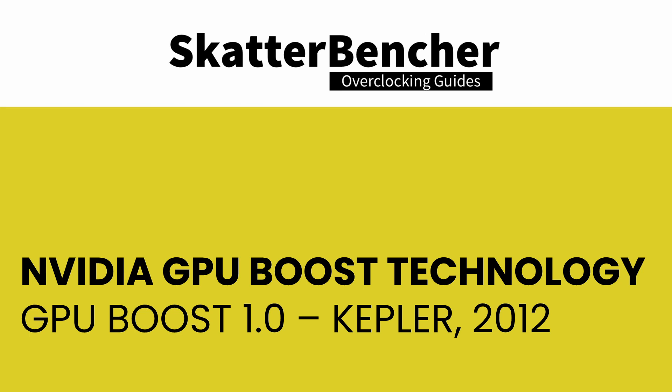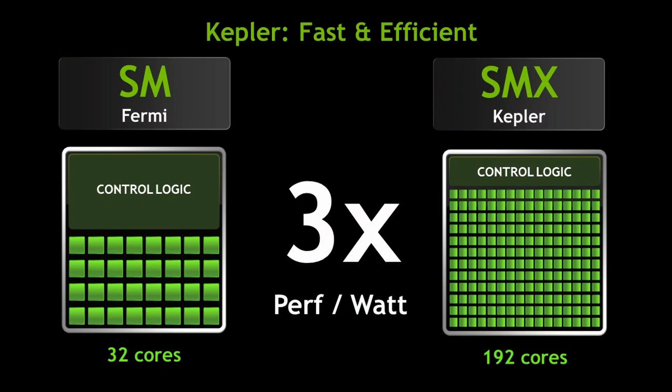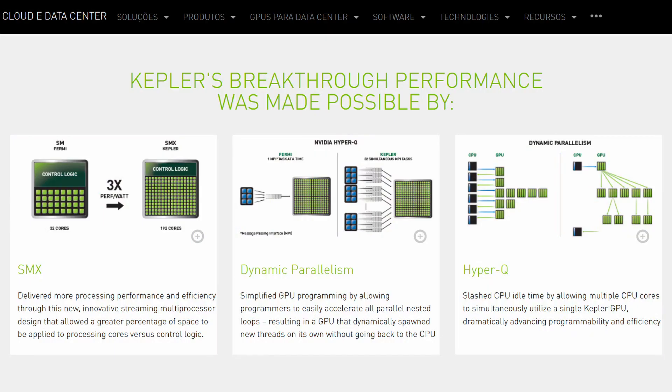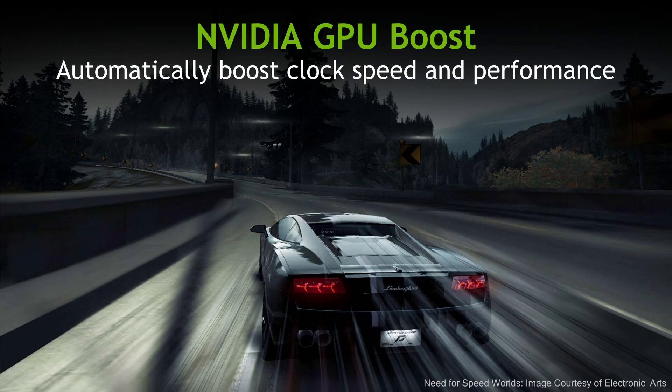In fact, we can only overclock using the GPU Boost technology, and overvolting is pretty much limited. In March 2012, Nvidia launched Kepler, which was the successor to the Fermi microarchitecture. The Kepler architecture featured many innovations, including the SMX architecture, dynamic parallelism, and Hyper-Q. While these technologies drove the intergenerational performance improvements, another technology would drive the intragenerational performance: Nvidia GPU Boost.